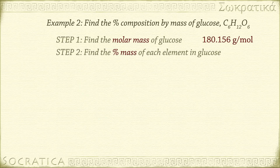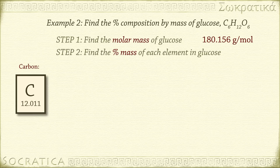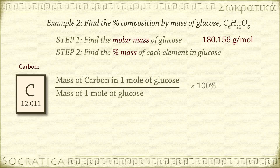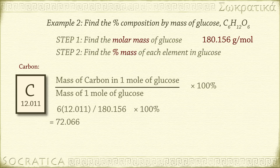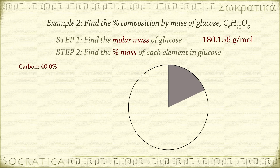Step 2: find the percent mass of each element in glucose. We will take the mass of each element in one mole of glucose, divide it by the molar mass of glucose, then multiply by 100%. First, percent mass from carbon: 6 times 12.011 grams, divided by 180.156 grams, times 100%, equals 72.066 grams divided by 180.156 grams, times 100%, equals 0.400 times 100%, equals 40.0%. So glucose is 40% carbon by mass.